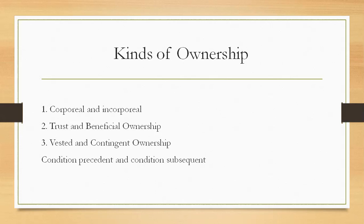Then comes contingent interest. Where, in a transfer of property, an interest is created in favor of a person to take effect on the happening or not happening of an uncertain event, such a person acquires a contingent interest in the property. Such interest becomes a vested interest on the happening of the event, or when the event becomes impossible, as the case may be.